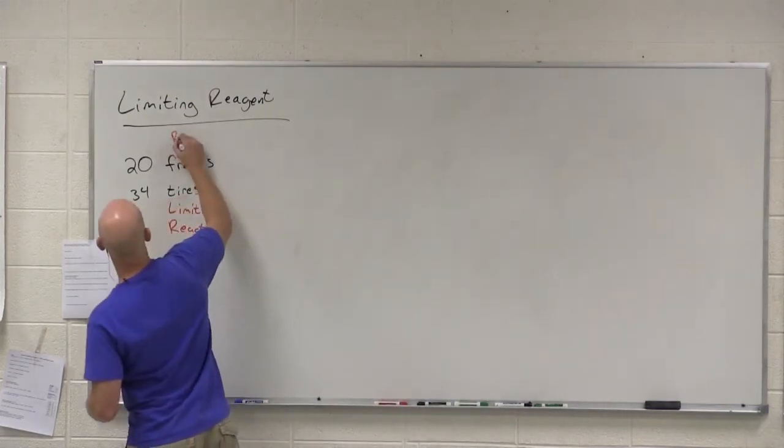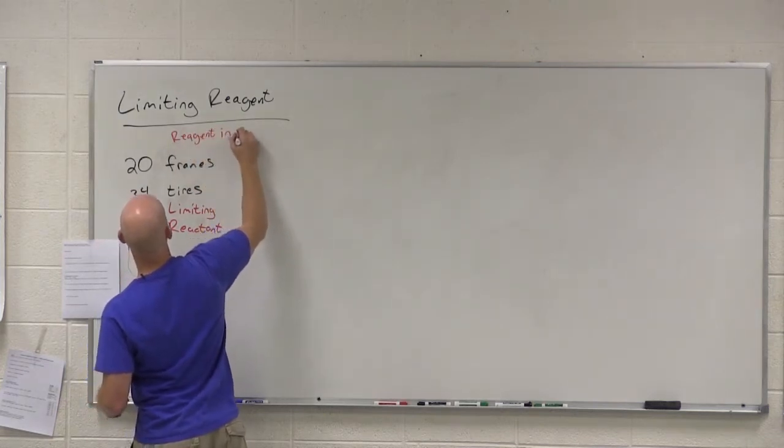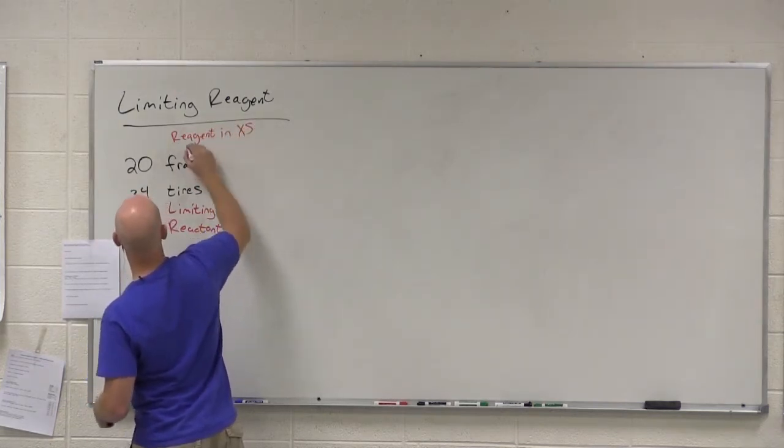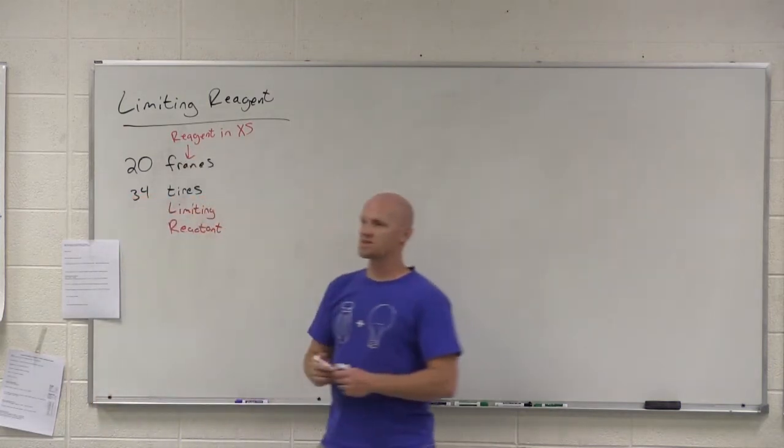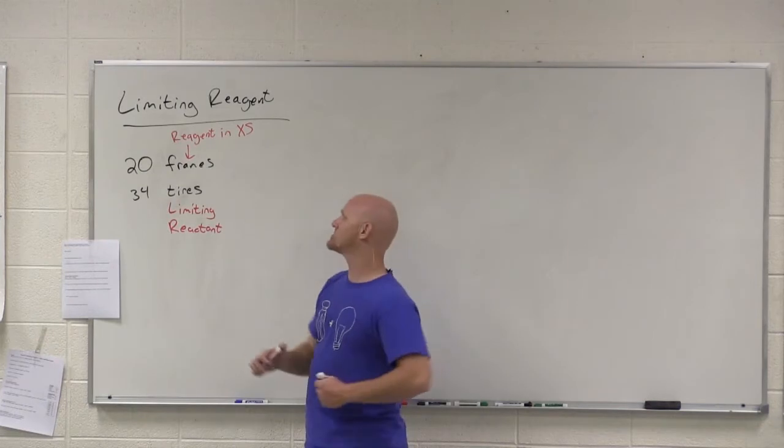So we'd call this the reagent in excess, which I like to abbreviate as XS. So reagents in excess, the one left over. And you very easily calculated that there were three left over. Life is good.